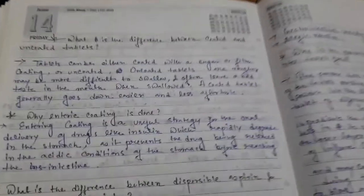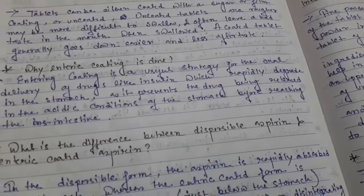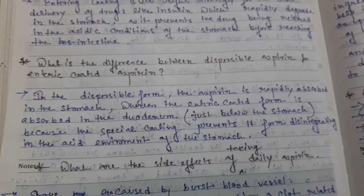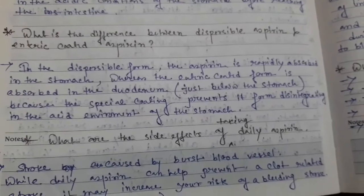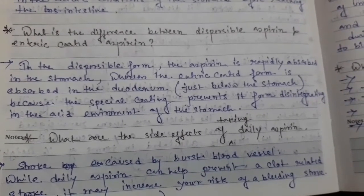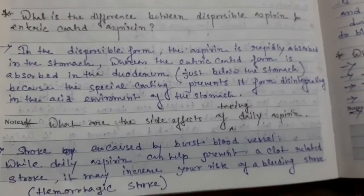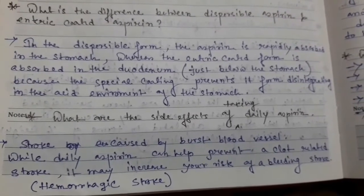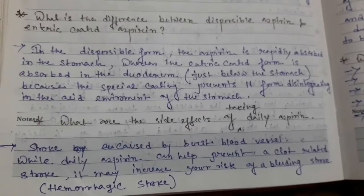Why is enteric coating done? Enteric coating is a useful strategy for the oral delivery of a drug. What is the difference between dispersible aspirin and enteric coated aspirin? In the dispersible form, aspirin is rapidly absorbed in the stomach, whereas the enteric coated form is absorbed in the duodenum. What are the side effects of taking daily aspirin? Stroke caused by a burst blood vessel. Why can daily aspirin help prevent a blood-related stroke?